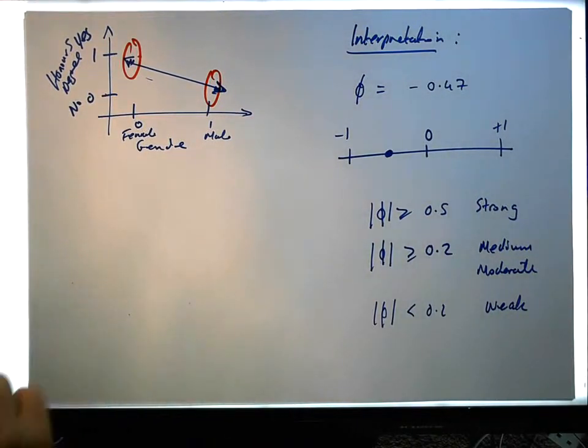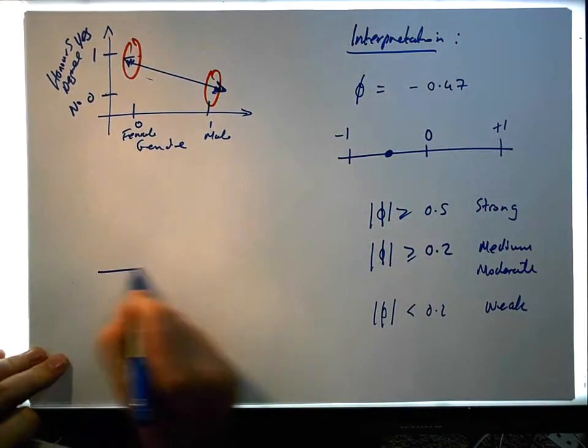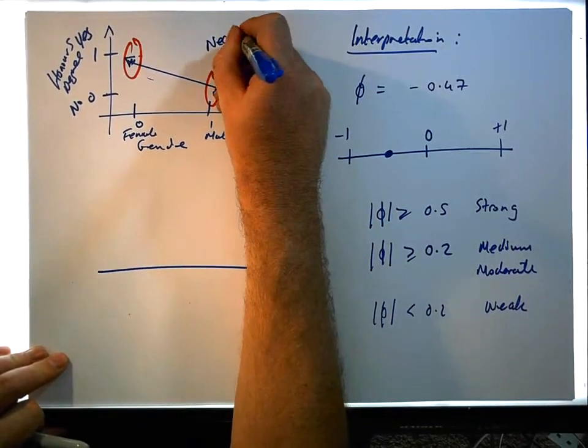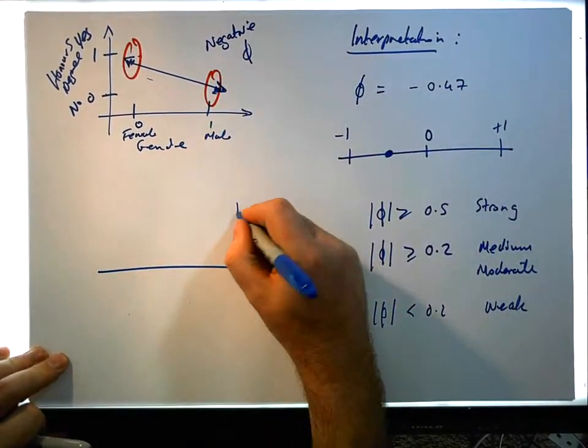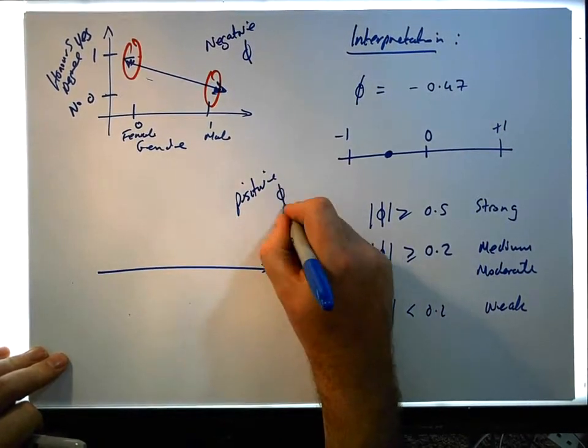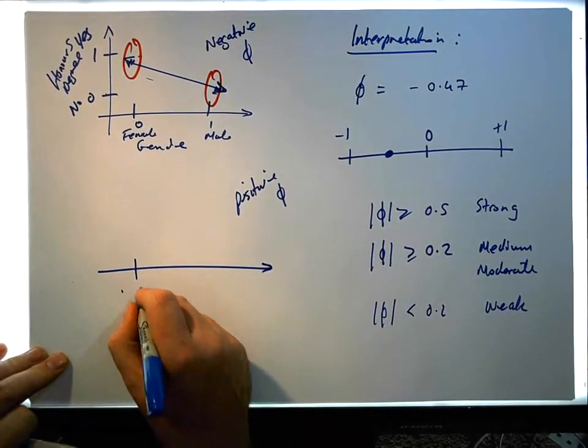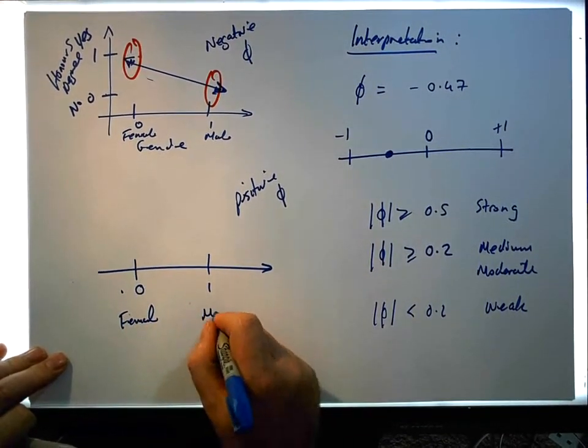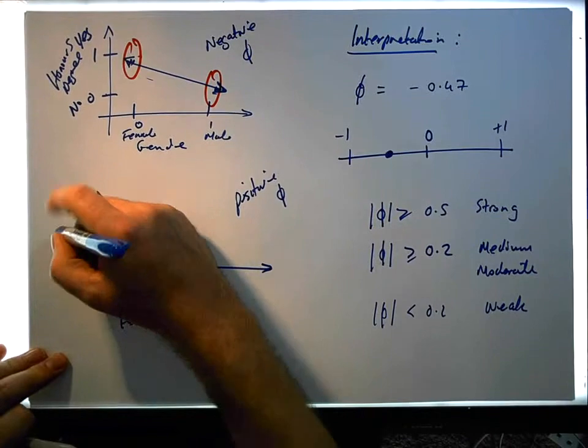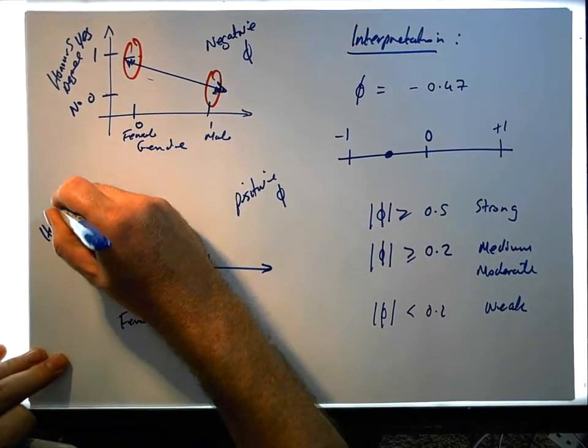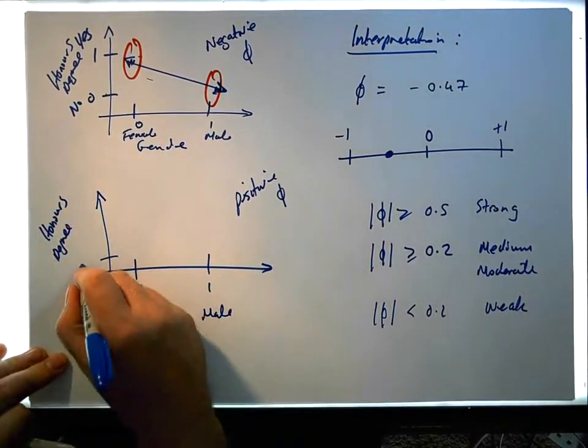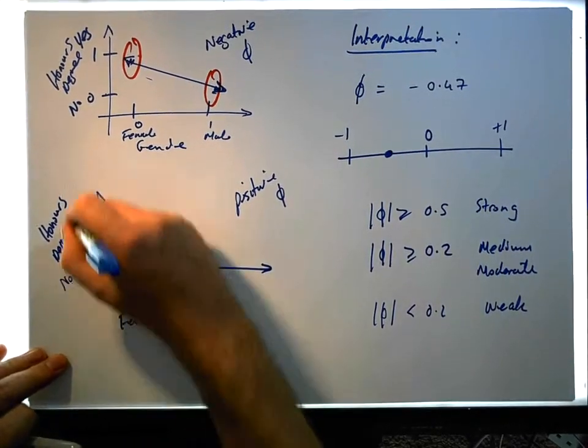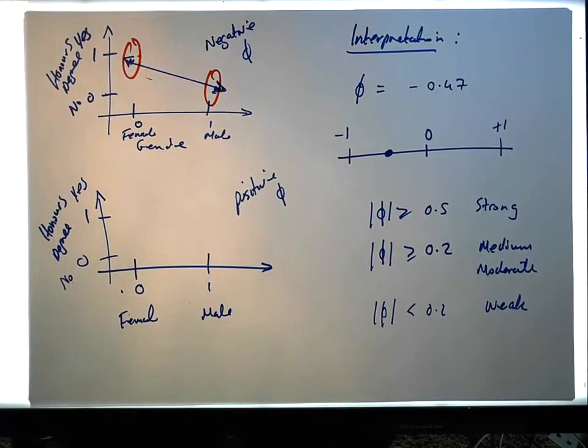Alternatively, if it was positive phi instead of negative phi, we'd have 0 and 1 for females and males. And up here we have honours degree, whether you hold one or not, 0 and 1 for no and yes. If it's positive, the line goes up.